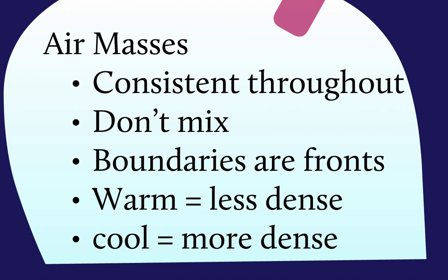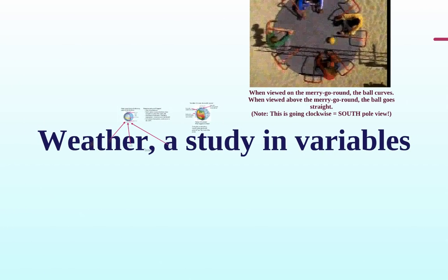The next thing we talked about were air masses. They're consistent throughout — they don't mix. So obviously tornadoes can't form because hot air mixes with cold air; as we found out, they don't mix. We know the boundaries between air masses are called fronts. Warm air masses are less dense and they rise, and cool air masses are more dense and they sink. That's kind of what we have so far in a nutshell.